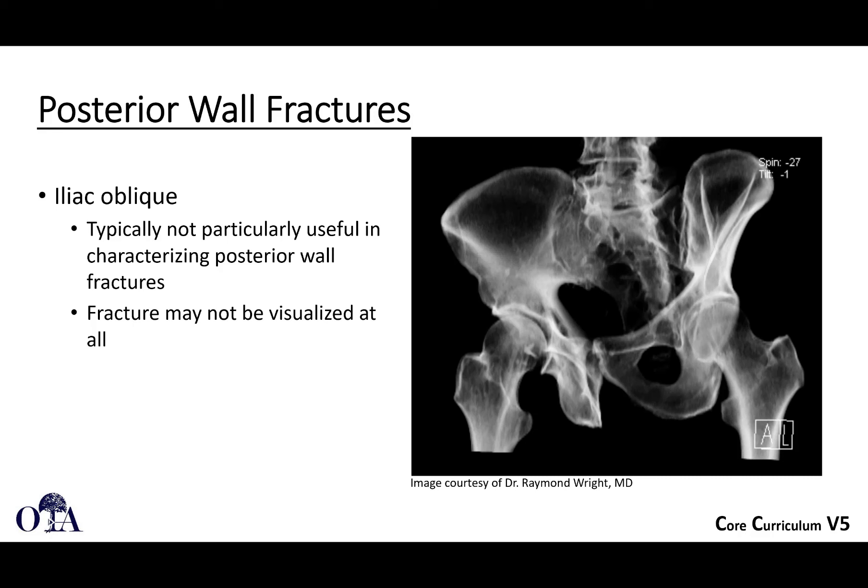On the iliac oblique, what you will see is that the posterior column is intact typically — that line is not disrupted.